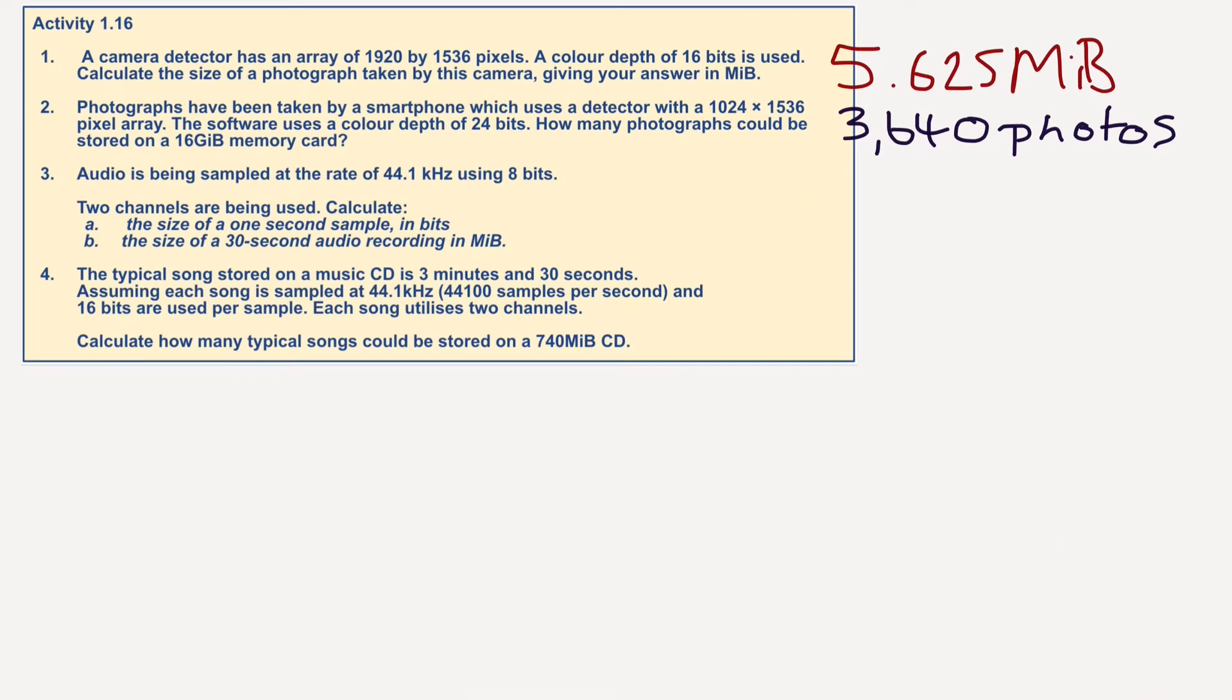So let's have a look at the next question, question three. Audio is being sampled at a rate of 44.1 kilohertz using 8 bits. Two channels have been used, so it's in stereo. Calculate the size of a one second sample in bits. So the sample size equals 44,100. Well, I've done that because it's kilohertz, so I've turned it into hertz. 44,100 hertz.